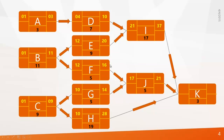Calculate the early finish for I and J: they are 37 and 21. Now the fourth and final level: K is waiting for I, J, and H to complete. Pick the longest duration, which is 37, and add 1, making 38 the early start of K. The early finish of K becomes 40. Since K is the last activity, the project will finish on day 40. This method of calculating early start and early finish is called the forward pass.